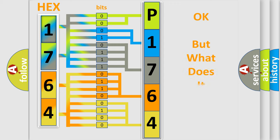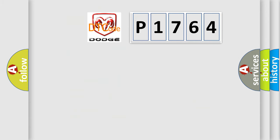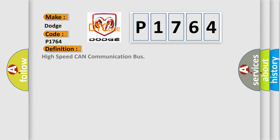We now know in what way the diagnostic tool translates the received information into a more comprehensible format. The number itself does not make sense to us if we cannot assign information about what it actually expresses. So, what does the diagnostic trouble code P1764 interpret specifically for Dodge car manufacturers?